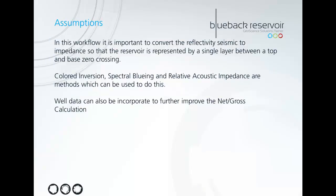There are a couple of assumptions of this workflow that you need to be aware of before running it. The first is that you need to convert your reflectivity into impedance so that your reservoir is represented by a single layer between a top and base zero crossing. There are a couple of methods provided to do this in the toolbox — coloured inversion and spectral bluing — which you can use to convert your seismic between reflectivity and impedance. In addition, to make the net-to-gross calculation even more accurate, you can also incorporate well data to scale the tuning curve. But in this example I'm just going to keep it simple.